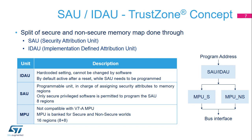The v8M Memory Protection Unit (MPU) is programmed through start address and end address, whereas the v7M MPU is based on start address and power-of-two size. Therefore, these two versions of the MPU are not compatible. The MPU is banked for secure and non-secure worlds. The STM32L5 supports 16 regions per MPU.